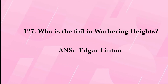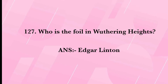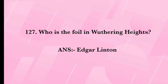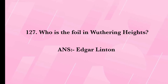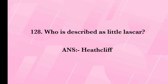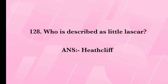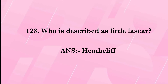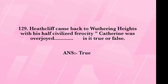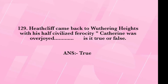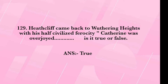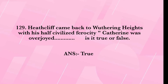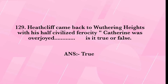Who is the fool in Wuthering Heights? Answer: Edgar Linton. Who is described as 'dark'? Answer: Heathcliff. Heathcliff came back to Wuthering Heights with his half-civilized ferocity and Catherine was overjoyed. Is this true or false? Answer: True.